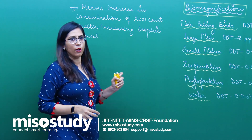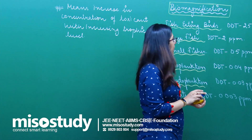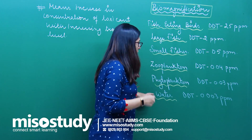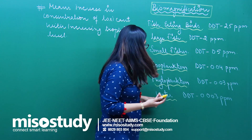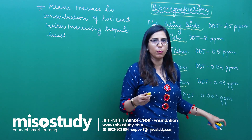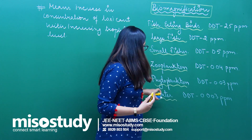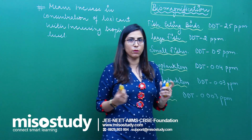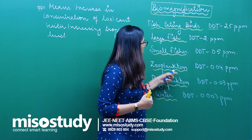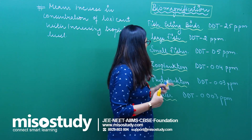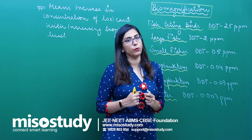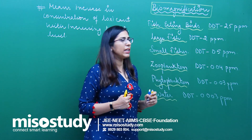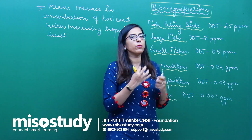A very good example is DDT. In a food chain starting with water, the DDT concentration is 0.003 ppm in water. In phytoplankton it was 0.03 ppm, in zooplankton it was higher than phytoplankton, in small fishes it was 0.5 ppm, and in large fishes it came out to be 2 ppm.